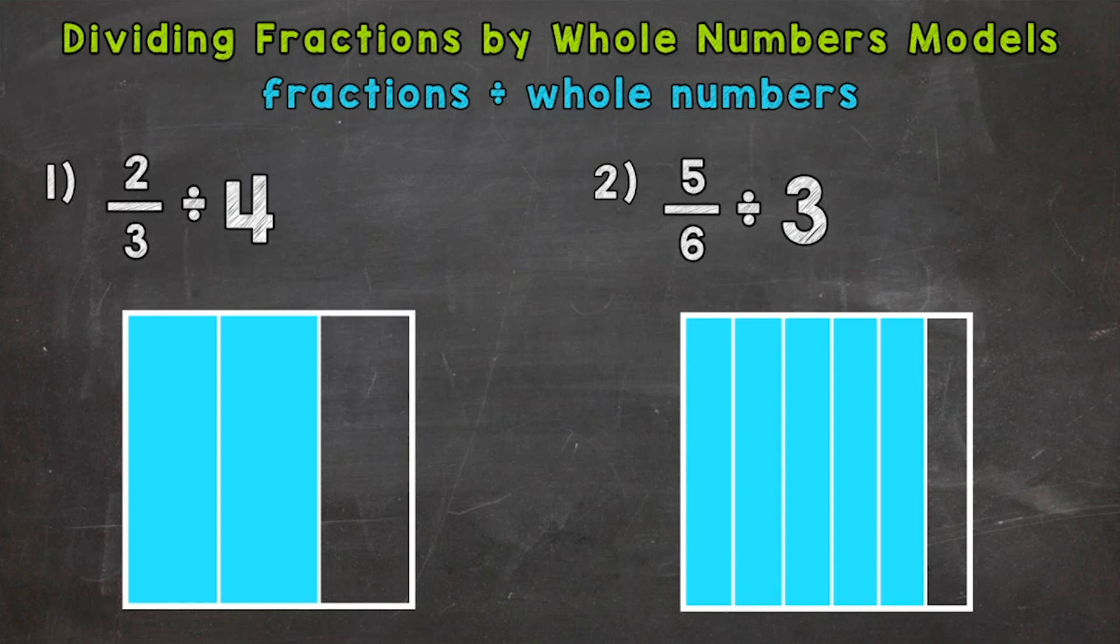And again, we're doing fractions divided by whole numbers. So let's jump into number one, where we have two-thirds divided by four. We're starting with a fraction, which is two-thirds in this case, and we're splitting it into four equal groups and seeing what one of those groups equals.